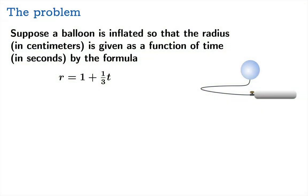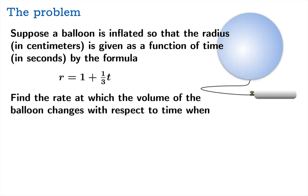So let's just look at a concrete problem. Suppose a balloon is inflated so that the radius in centimeters is given as a function of time in seconds by the formula r equals 1 plus 1 third t. Now our goal is to find the rate at which the volume of the balloon changes with respect to time when r equals 2 and then a second problem when t equals 6. So we have these two different moments when we're supposed to find the rate of change of the volume of the balloon with respect to time.